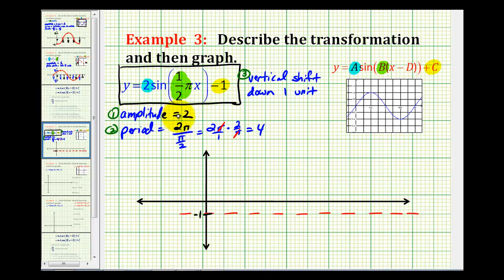Next, our amplitude is positive two, which means from the midline, we'll go up two units and down two units to mark where the max and mins will occur. So if we go up two from negative one, we'll be at positive one. And if we go down two from negative one, we'd be at negative three.